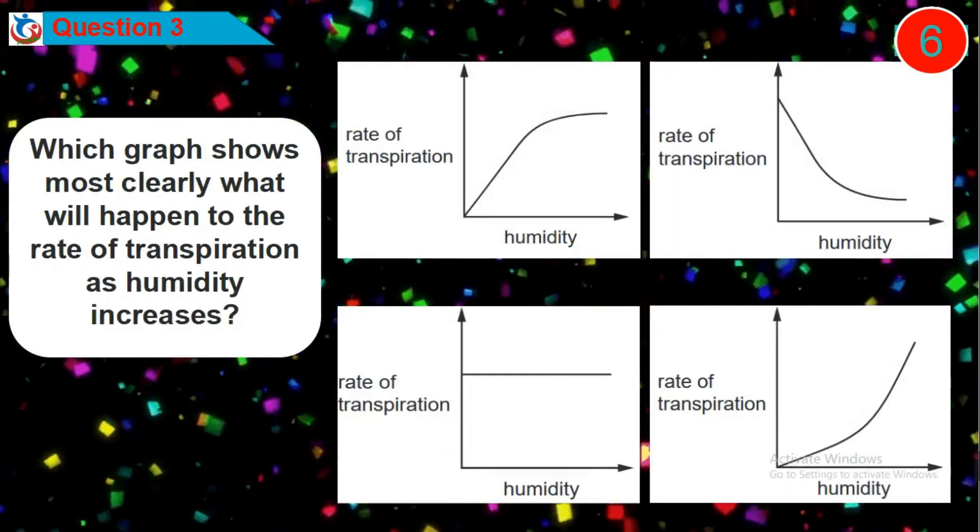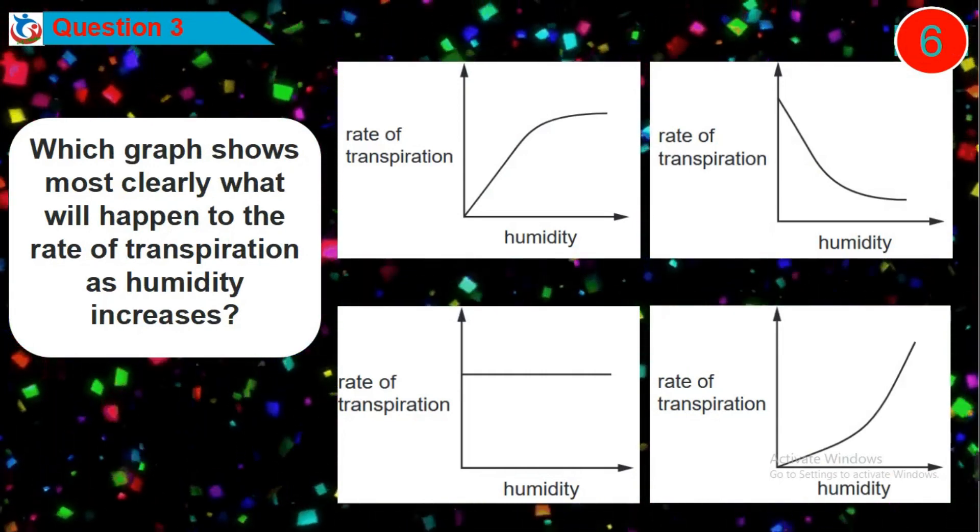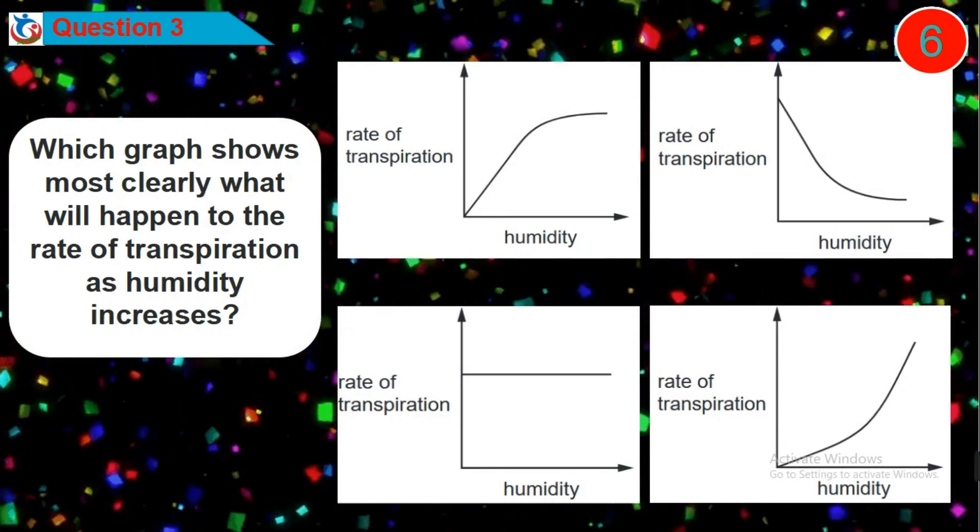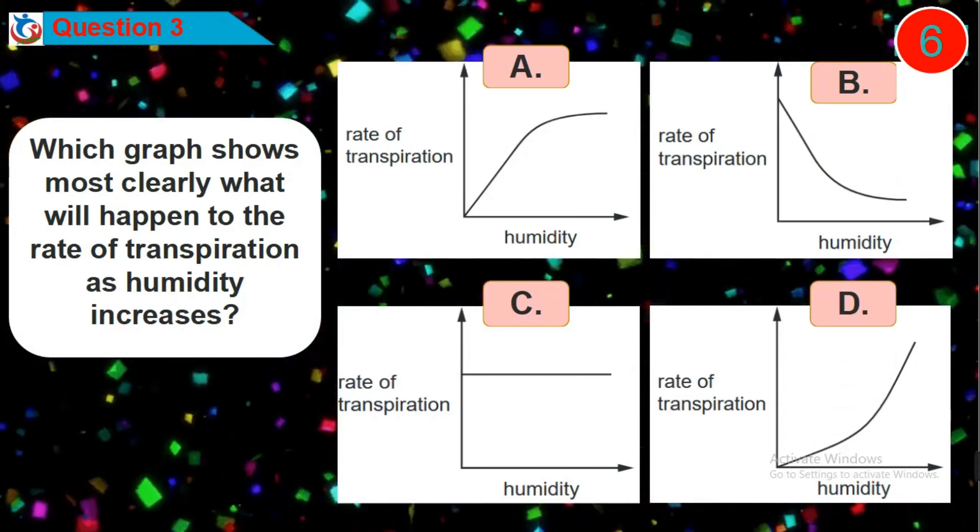Question 3. Which graph shows most clearly what will happen to the rate of transpiration as humidity increases? Is it option A, B, C or D?